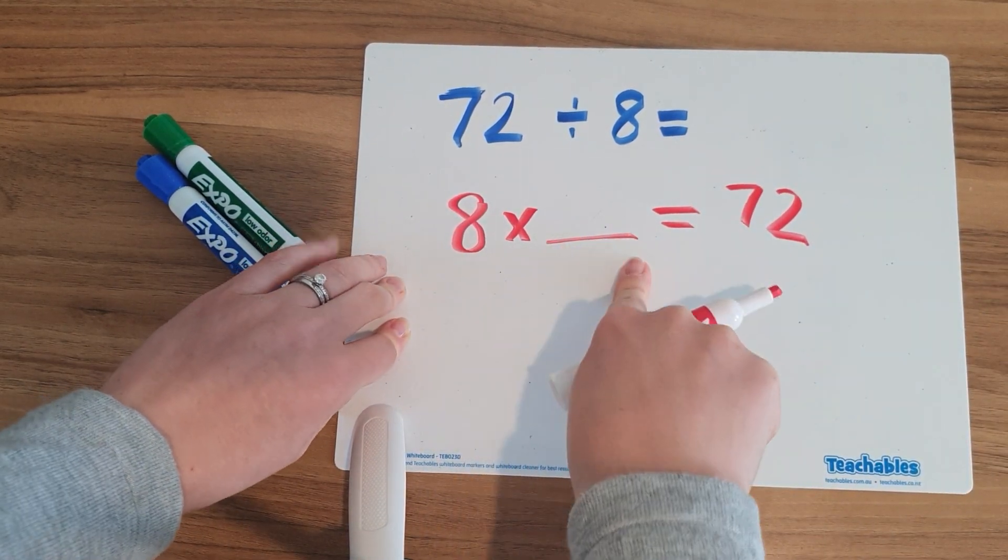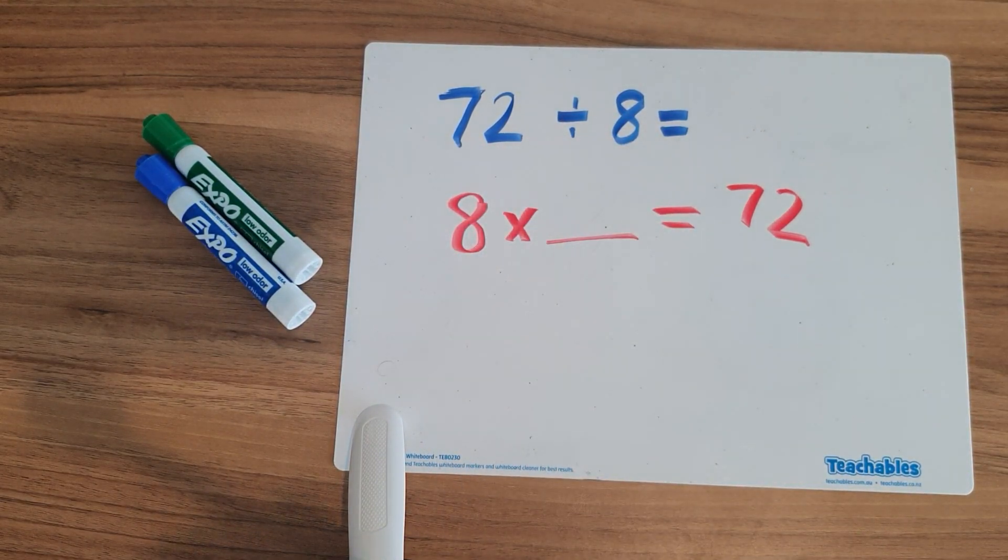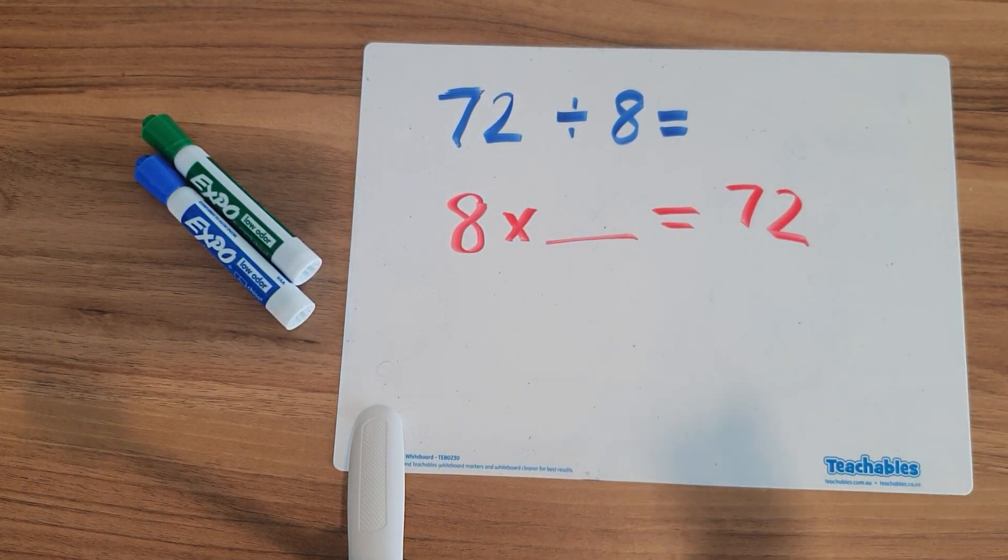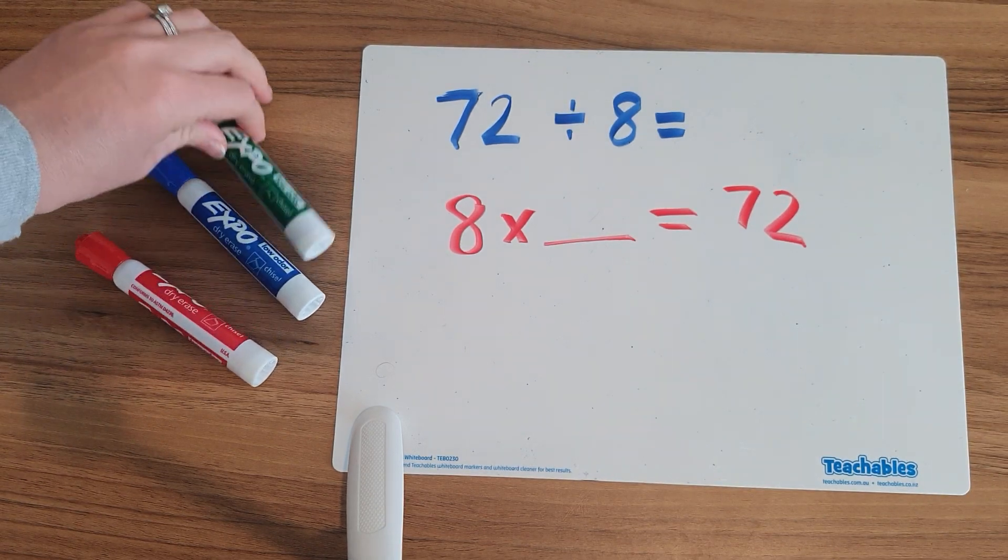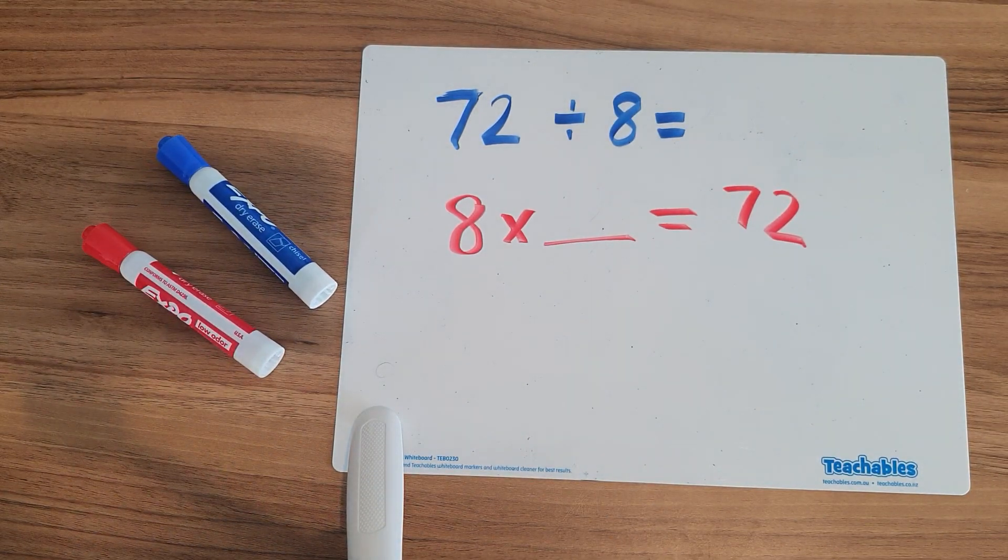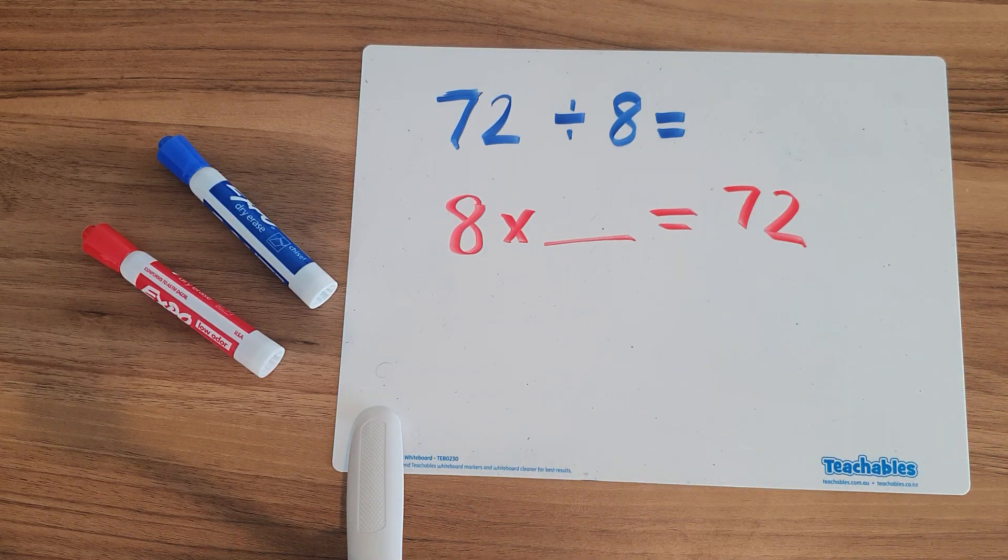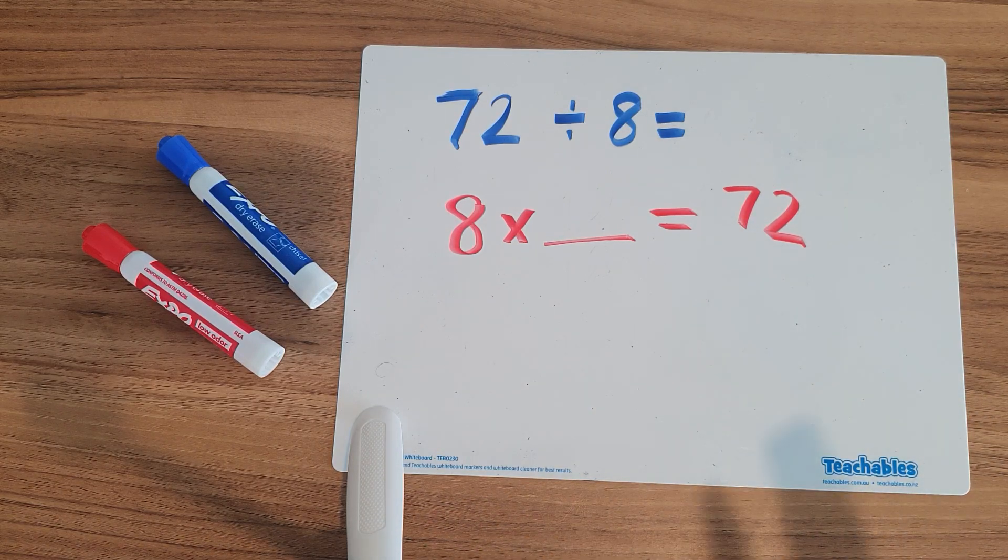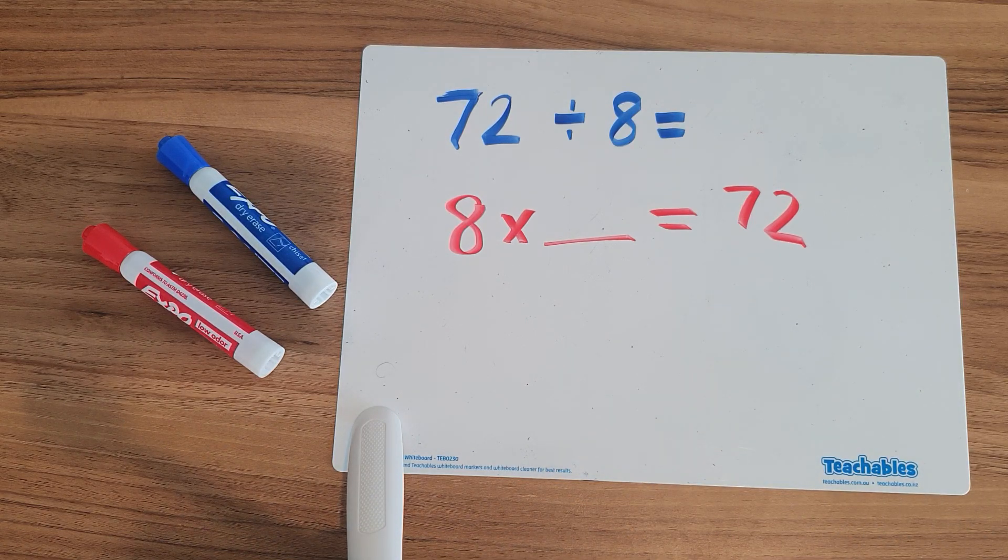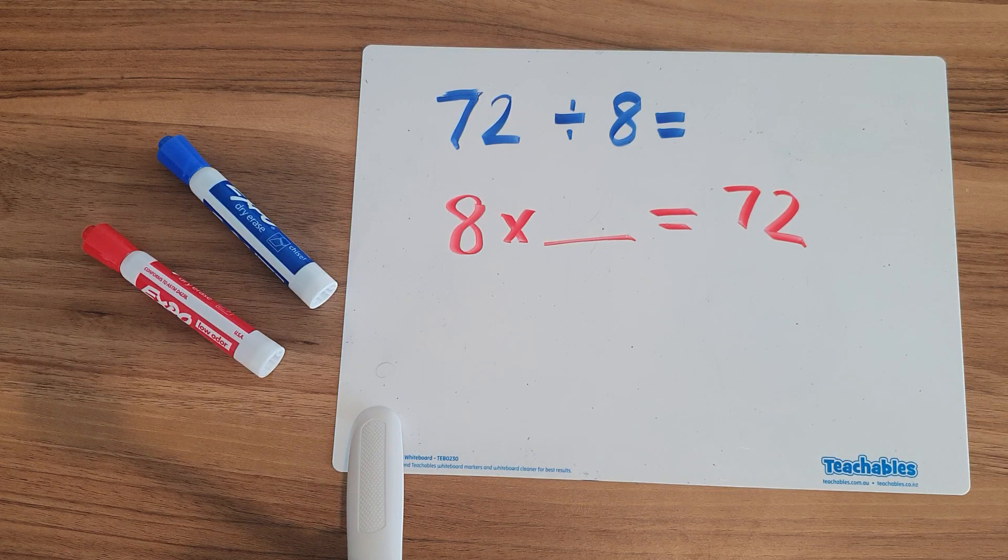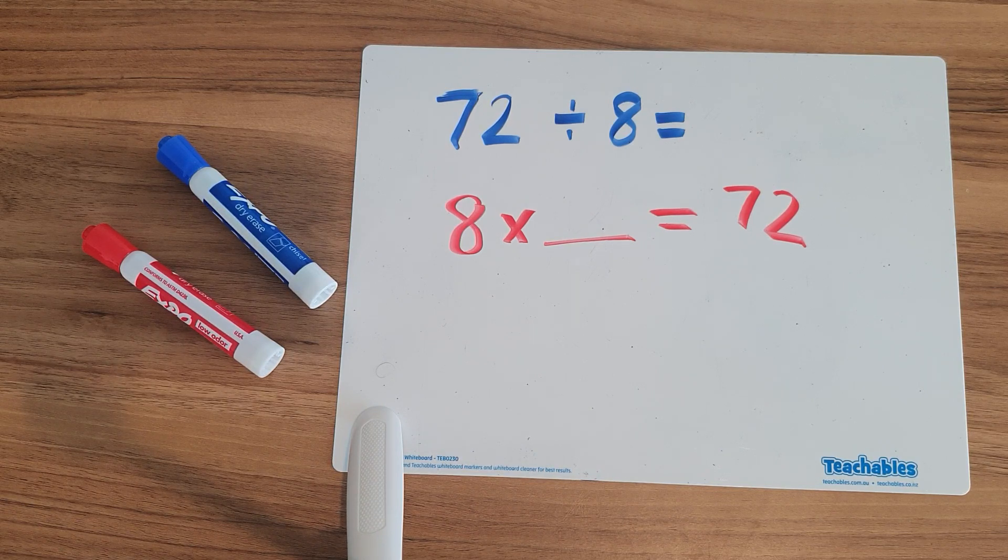So what times 8 is going to give us 72? So those are our similar facts that we've already noticed from before. So we need to figure out, I know my 8 times table, what times 8 is going to give me 72? And you might even need or want to have open a times table chart for you so that you can have access to that easily.